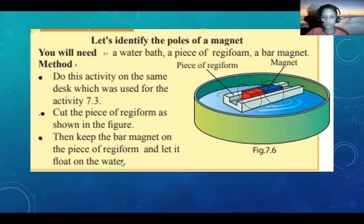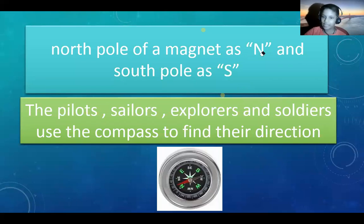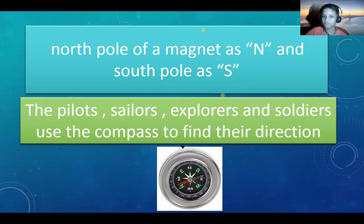Then keep the bar magnet on the piece of rigiform and let it float on the water. The north pole of a magnet is shown here and the south pole is shown here. The pilots, sailors, explorers, and soldiers use the compass to find direction. This is the compass.